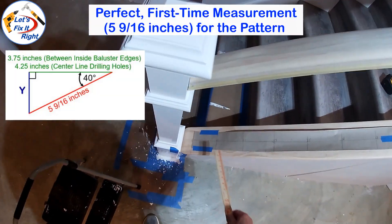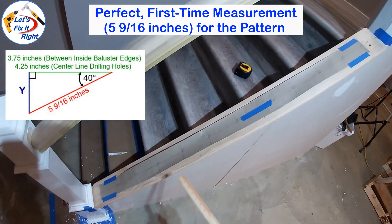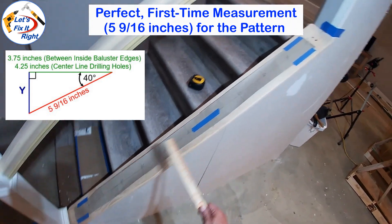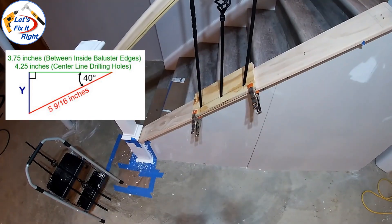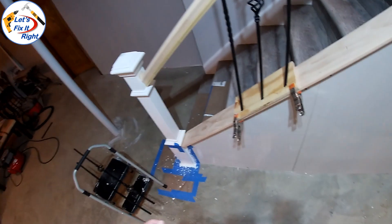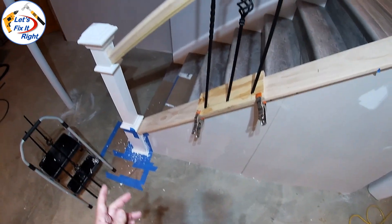To assist with the layout I put together this drilling pattern showing the 12 baluster locations which are 5 and 9/16 of an inch apart. This calculation seems like it was too easy so let's check it out on the knee wall.